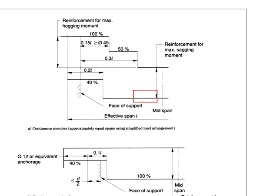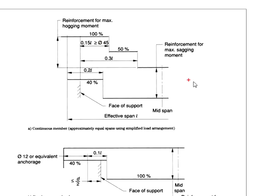You need 100% reinforcement area to withstand the maximum moment at the mid-span. Near the support, you may reduce to 40%. The curtailment may be done at 0.2 times the effective length. As for the top reinforcement, you need 100% of the reinforcement to withstand the maximum hogging moment at the support. At a distance of 0.15 times the effective length, which should be at least greater than 45 times the bar diameter, you may reduce the amount of reinforcement to 50%. Exceeding 0.3 times the effective length, you may stop the reinforcement.